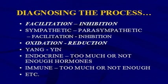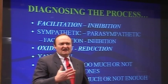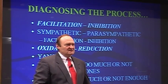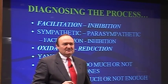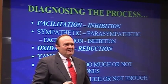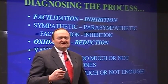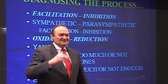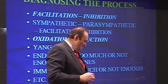We have facilitation/inhibition, sympathetic/parasympathetic, oxidation/reduction, yang/yin, endocrine, immune, and so on — simple processes that fit together in complicated ways. What we need is a road map to guide us through the different processes in the most optimal way. Think of it like MapQuest — do you want the quickest route or the most scenic? We want the most efficient and quickest route, and that's what the AK clinical protocol is: the most quick and efficient route to achieve the patient's health results.